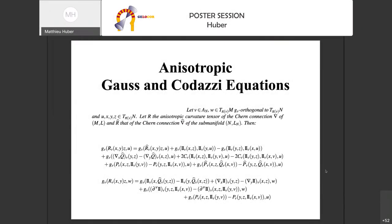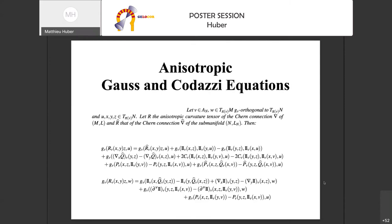Everything I am going to talk about is centered on the Gauss and Codazzi equations. Given the five minutes I have, I compiled just a part of what would have been in the poster — by anisotropic I mean in Finsler submanifold theory. The first slide features the equations as we have calculated them. The first equation is the Gauss equation and the second is the Codazzi equation of a submanifold.